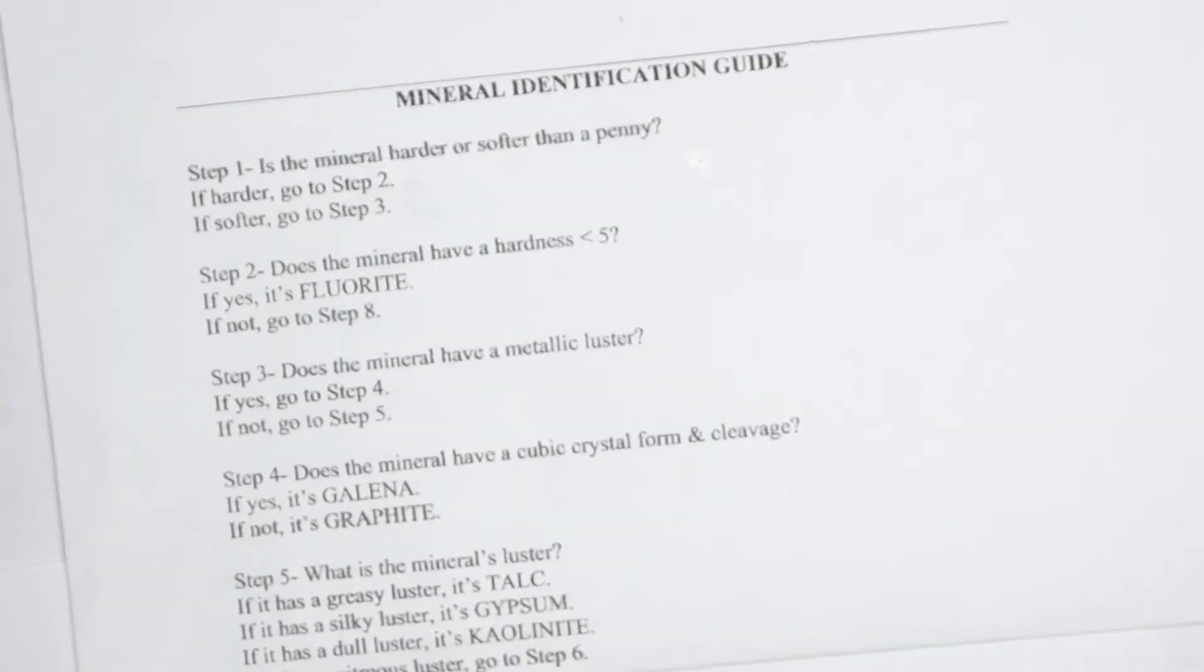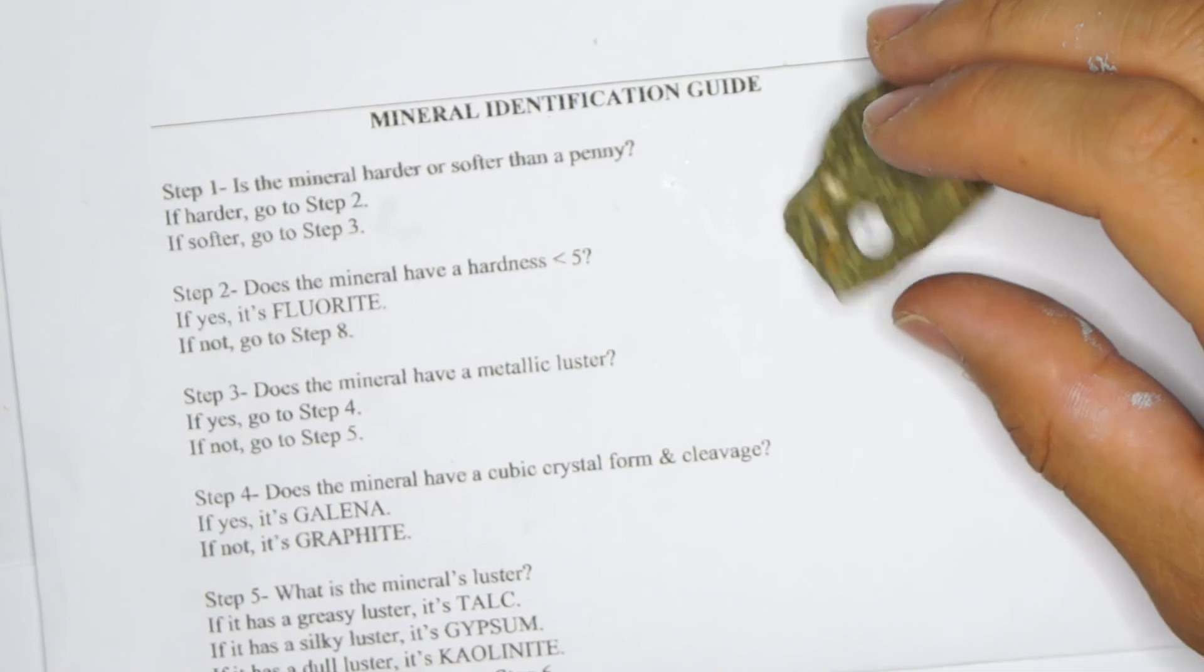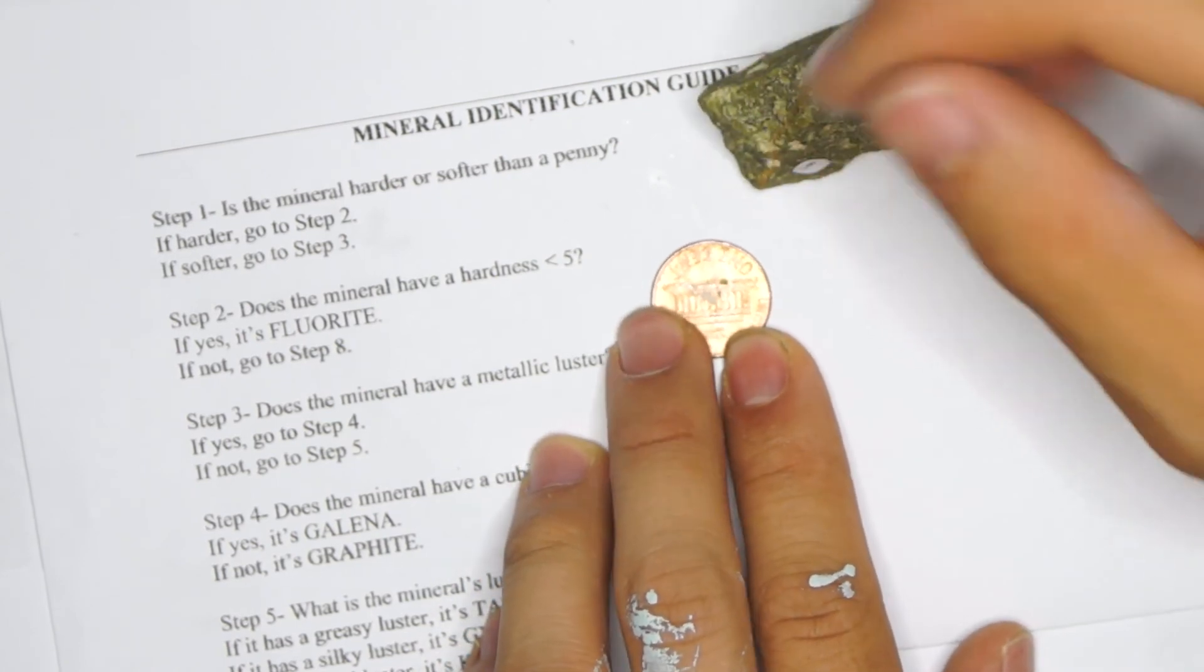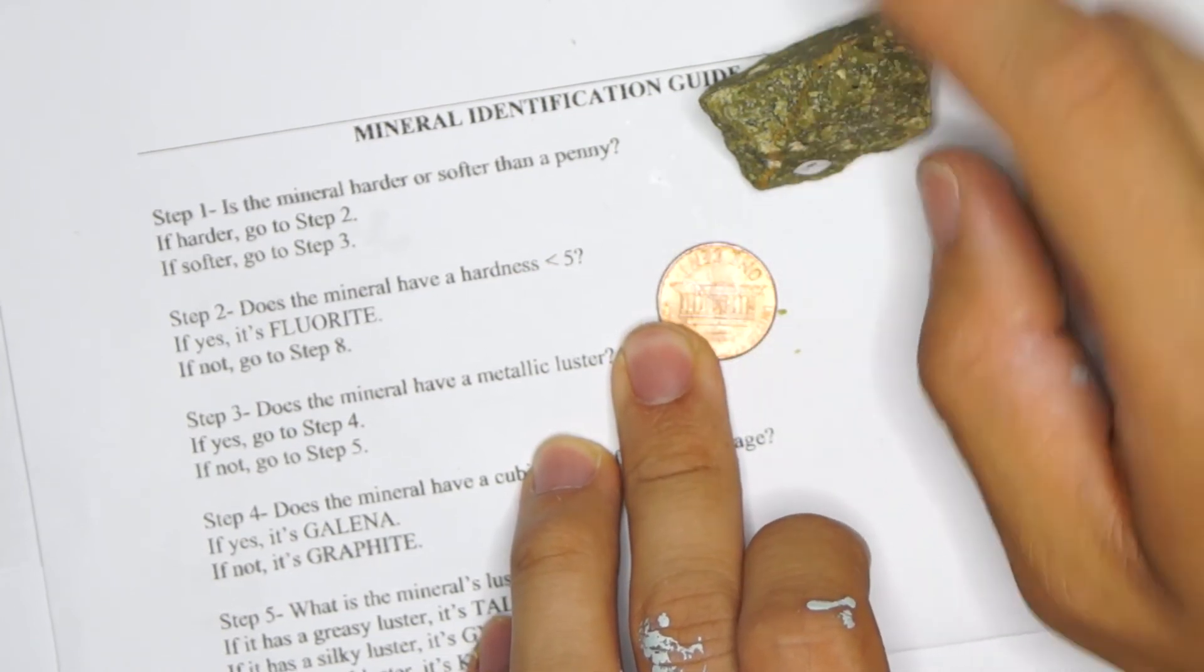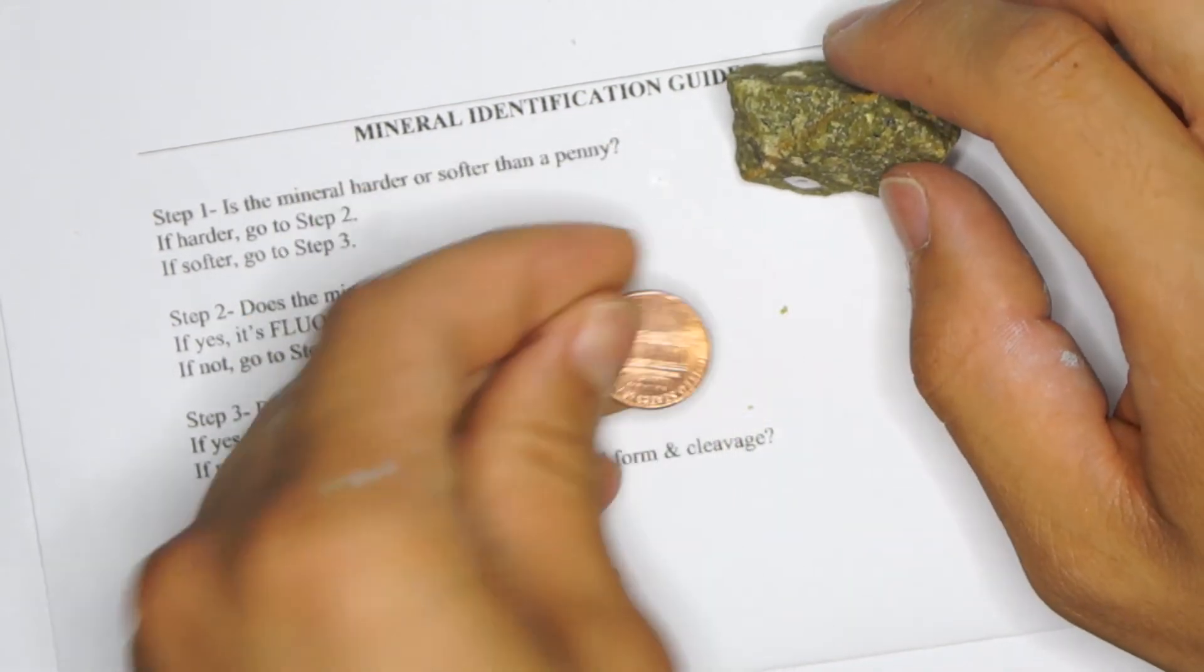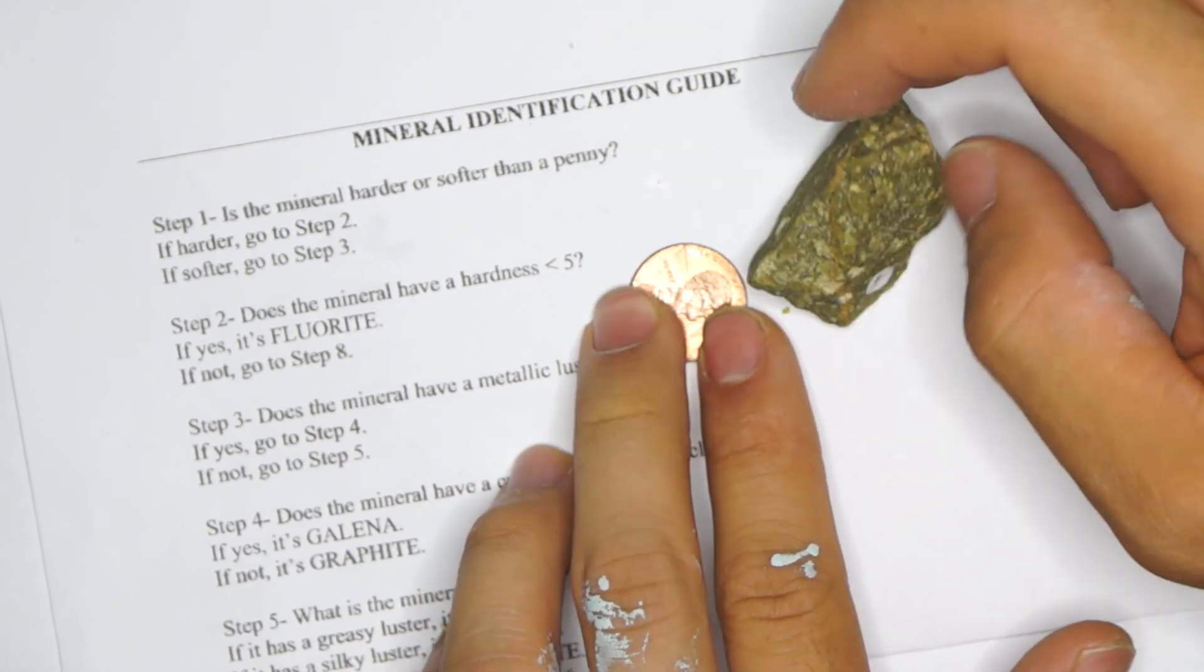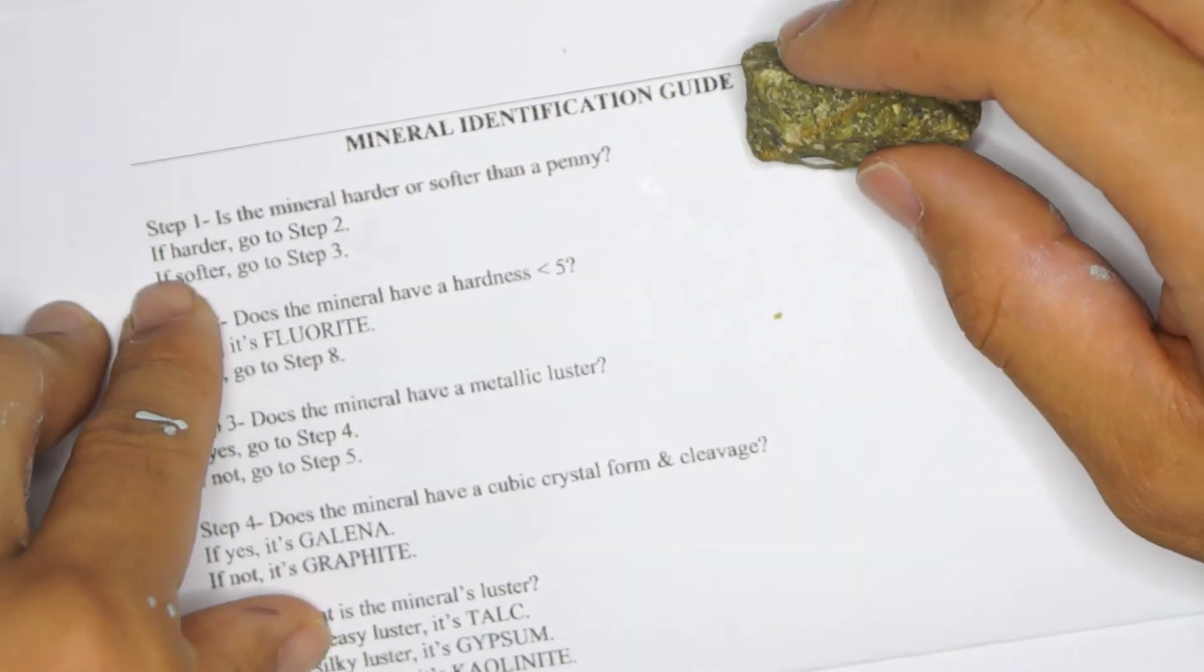For our second example, we're going to do this greenish looking mineral, number six. Is the mineral harder or softer than a penny? We're going to pull out this penny and scratch the penny. This is a good point and this is why I chose this rock. When you scratch this rock on the penny, the rock is powdering off onto the penny. That's not because it is a soft rock per se, but that's just because it's a very structurally weak rock. Just remember that this will still scratch the penny. And that's the main point. If this rock scratches the penny, even if it's breaking, it still means it has an inherent hardness instead of a structural hardness. So it is harder than the penny. We're going on to step two.